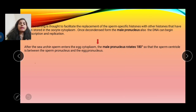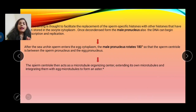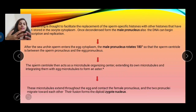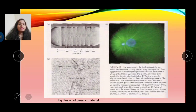After the sea urchin sperm enters the egg cytoplasm, the male pronucleus rotates 180 degrees so that the sperm centriole is positioned between the sperm pronucleus and the egg pronucleus. The sperm centriole acts as a microtubule organizing center, forming microtubules that extend toward the egg pronucleus, bringing the male and female pronuclei together to form the diploid zygote. This completes the fusion of genetic material in sea urchin.